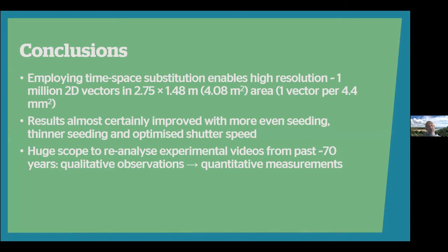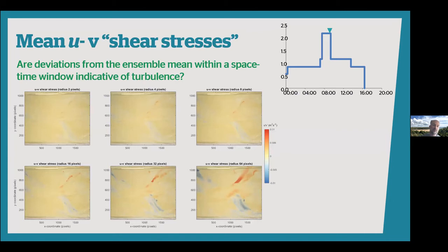In conclusion, by employing time-space substitution and ensembling all PTV traces, we obtain high-resolution — up to one million 2D vectors in a four square metre area with a resolution of about one vector per 4.4mm. Results can almost certainly be improved with more even seeding, thinner seeding since the hammer beads got stuck in flows less than about five millimetres deep, and by optimising the camera shutter speed. There is huge scope to reanalyse experimental videos from the past 70 years and turn qualitative observations into quantitative measurements.